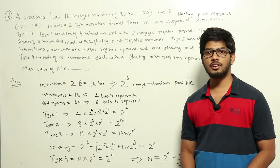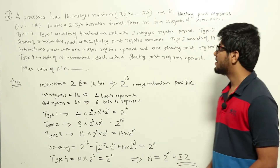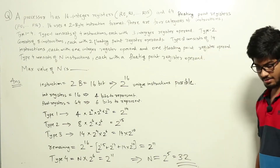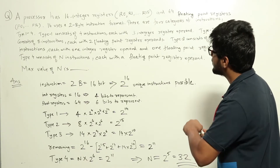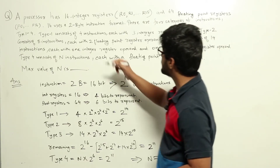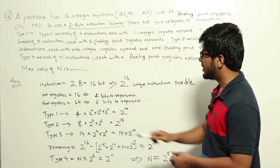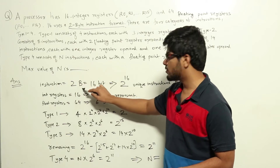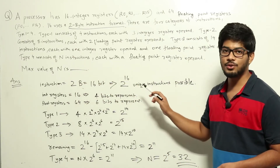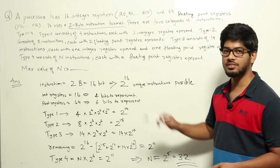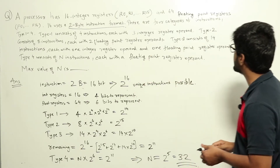This is a question from computer organization about machine instructions. The 2 byte instruction format means the size of the instruction is 2 bytes or 16 bits. Therefore the total number of unique instructions it can have is 2 power 16. Now let's look at how much each type uses up.